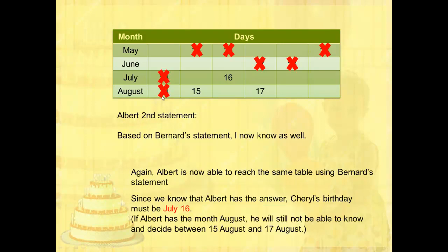Now let's look at Albert's second statement. Based on Bernard's statement, Albert says: I now know as well. Albert is able to reach the same table using Bernard's statement. Since Albert has the answer, Cheryl's birthday has to be July 16th. It cannot be August, because if he has August, he cannot decide between the 15th or 17th. So therefore it must be July, giving us the answer of July 16th.